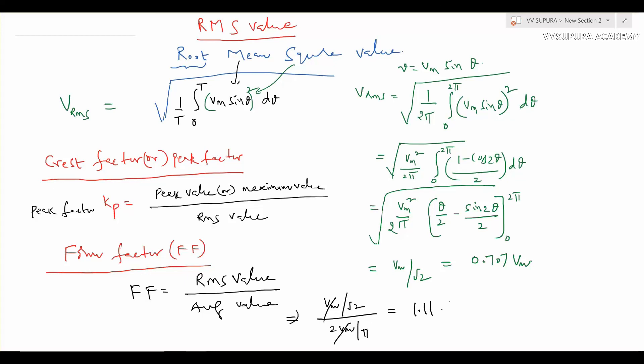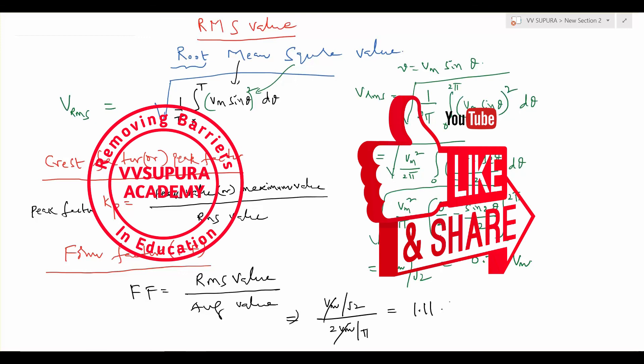To summarize today's session: we studied average value, RMS value, peak factor (crest factor), and form factor. We derived equations for a sinusoidal waveform and solved some problems. In the next class we'll solve more problems related to average and RMS values. I hope everyone understood these concepts — if you liked it, hit the like button, share it, and subscribe to my channel. Thank you, have a nice day!